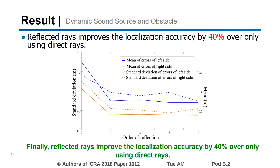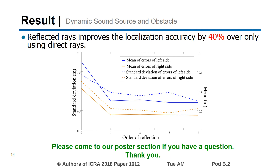Finally, reflected rays improve the localization accuracy by 40% over only using direct rays. Please come to our poster session if you have a question. Thank you.